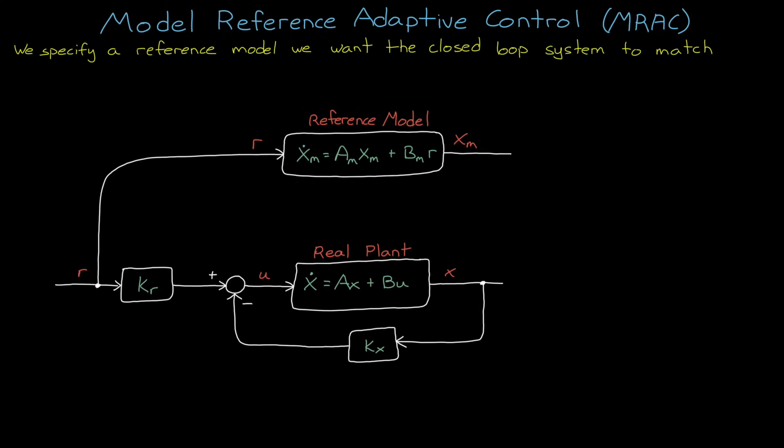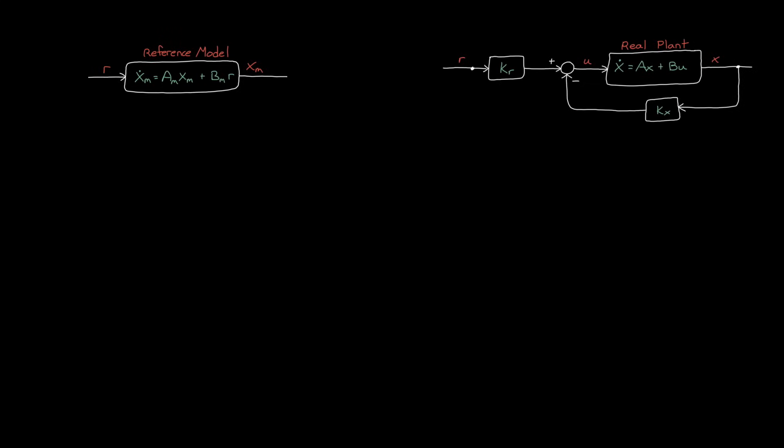However, alternatively, we can say that we want this closed loop system to behave like this other open loop system. This other system we get to choose, and it's our reference model. It represents the ideal behavior of the closed loop system. So how can we ensure that these two systems match?